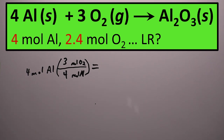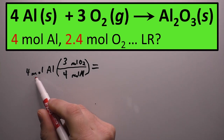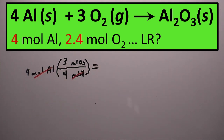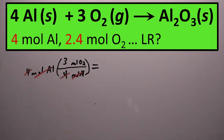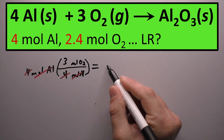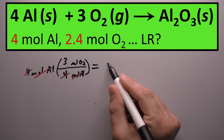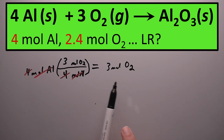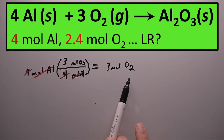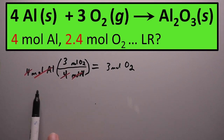Making sure our units cancel: moles of aluminum cancels with moles of aluminum, and the numbers four and four cancel out as well since anything divided by itself is one. So this conversion is mathematically pretty easy, and we're left with three moles of oxygen — that's how much oxygen is required to react with all four moles of aluminum.